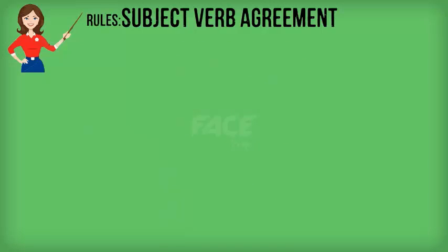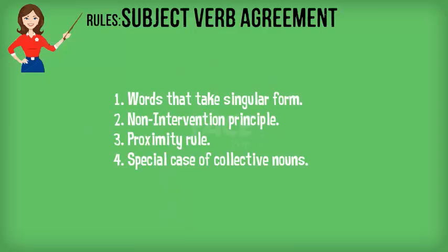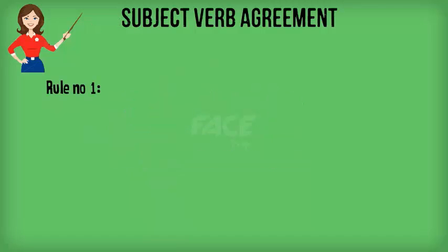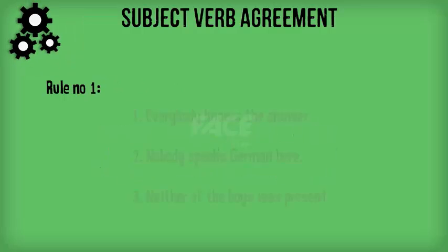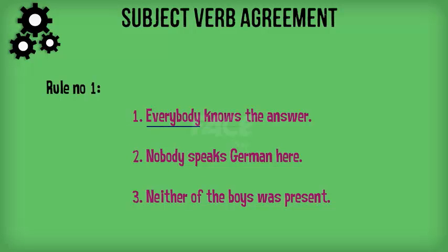There are a few rules to keep in mind when dealing with subject-verb agreement. Rule number one: when words like 'everybody,' 'nobody,' and 'neither' are used as subjects, they take a singular verb. Examples: 'Everybody knows the answer.' 'Nobody speaks German here.' 'Neither of the boys was present.'